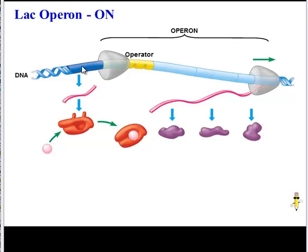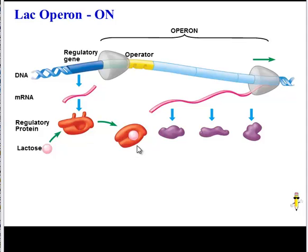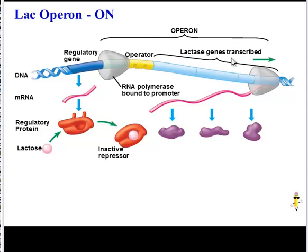The regulatory gene is being transcribed into RNA and translated into a regulatory protein. However, the lactose in the environment binds to that regulatory protein and changes its shape, so it is now an inactive repressor. It can no longer bind to the operator, which is good news for RNA polymerase, which can now bind to the promoter and start transcribing the lactase genes. Here's the lactase mRNA, and here it's been translated into lactase enzymes, which will go and break down lactose — and the bacteria will now have energy.